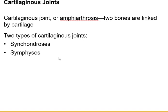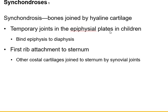We saw the pubic symphysis, where you join the two pubic bones together. The epiphyseal plate is hyaline cartilage holding the ends of the long bone to the shaft. The end of a long bone is called the epiphysis, and the shaft is called the diaphysis. So you have the epiphysis, then the epiphyseal plate, then the diaphysis, then another epiphyseal plate, then another epiphysis at the other end — that's an example of a synchondrosis, a cartilaginous joint.